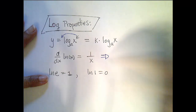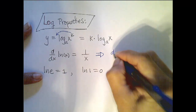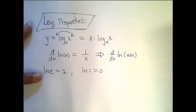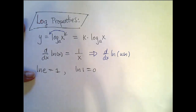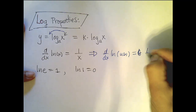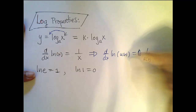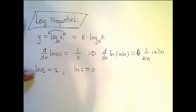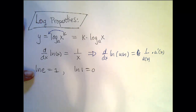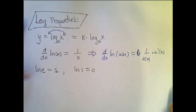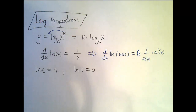This one is important to remember: if you're taking the derivative of the natural log of some function of x — not just x itself — it's 1 over that inside function times the derivative of that inside function, or 1 over u du. Let's look at some examples that utilize this technique.